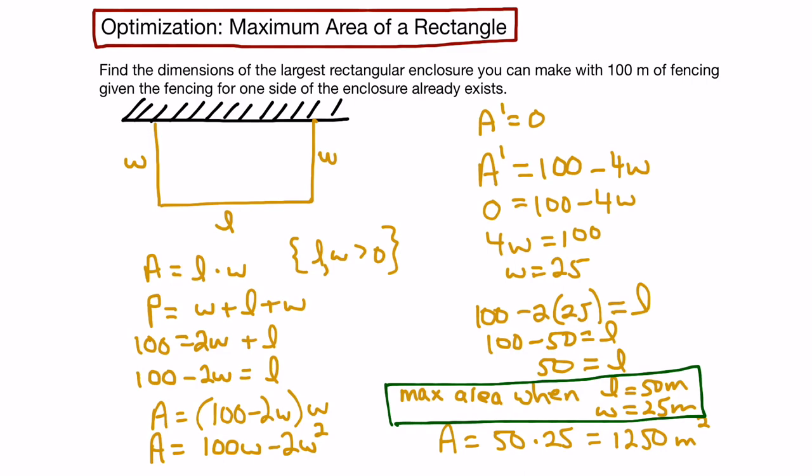One more thing we can say: for this scenario where we have a rectangular enclosure with three sides, the largest area we can make is when the length is twice the width. And that will be true regardless of how much fencing we're going to use.